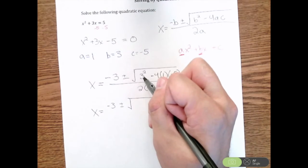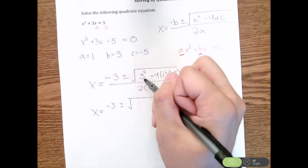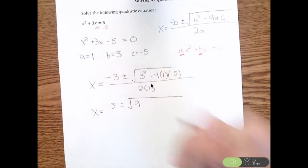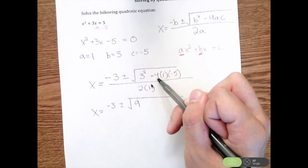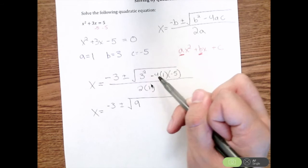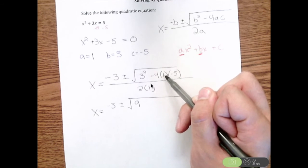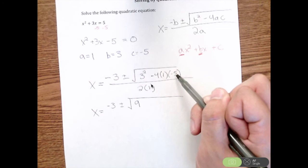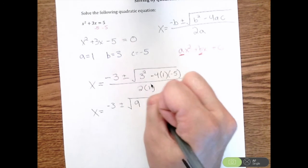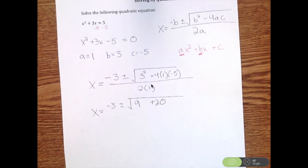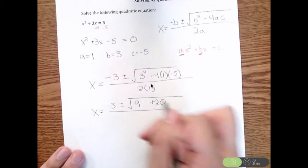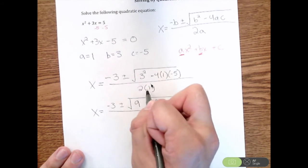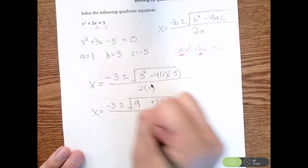First I'm going to do 3 squared. Well, 3 squared is 9. Then I have negative 4 times 1, which is negative 4. Then negative 4 times negative 5 is going to be positive 20. Still over 2a, and 2 times 1 is 2.